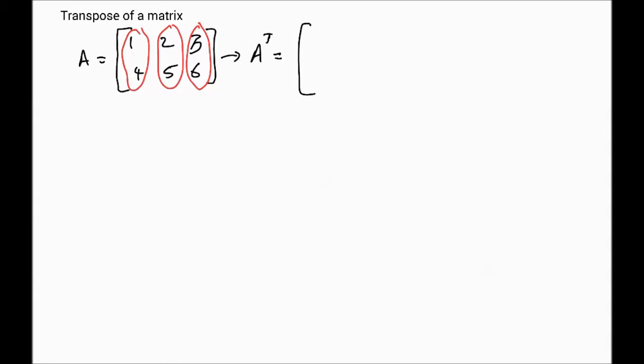So here, we will have 1, 4, 2, 5, and 3, 6. So you can see the connection between them. The rows have become columns and the columns have become rows. So any matrix, we can take the transpose of any size of matrix by simply interchanging the rows and columns. The columns become the rows and the rows become the columns.